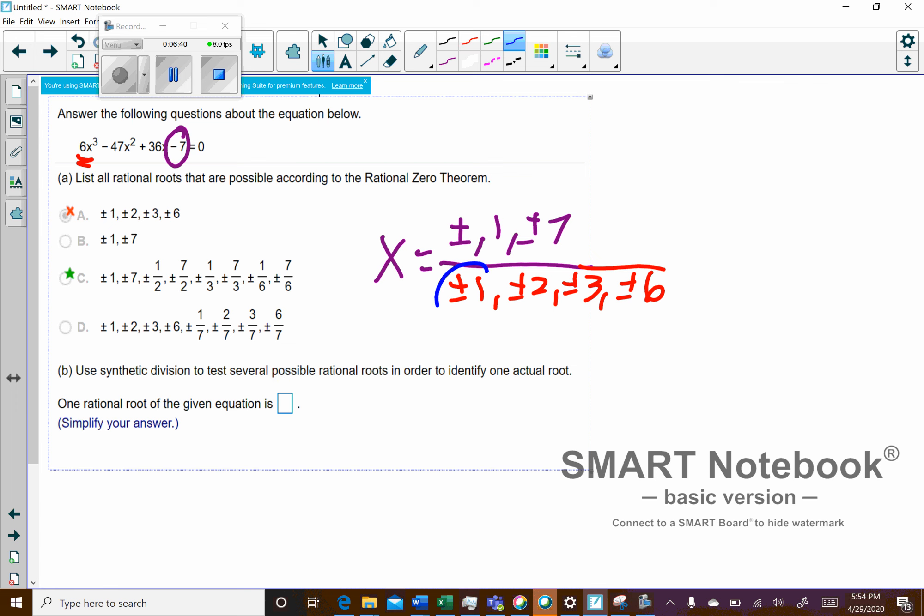So when I divide them all by 1, basically I get 1 and 7 again. Then next what I'll do is I'll divide them all by 2. So that's where the 1 half and the 7 over 2 come from. Then I'll divide them all by 3, and that's where I get the 1 third and 7 over 3. And once again, we always look at positive and negative. And then the last one, divide them all by 6, and that's where you get that.